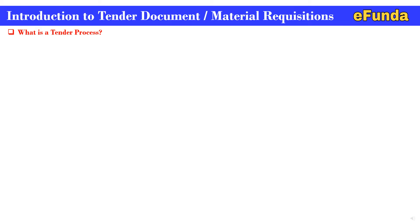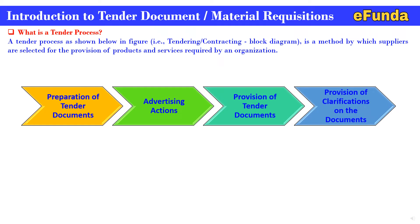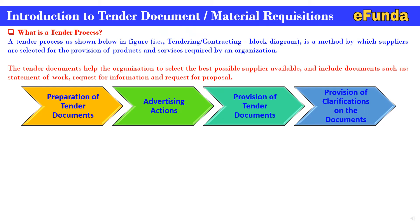What is a tender process? A tender process, as shown in the tendering and contracting block diagram, is a method by which suppliers are selected for the provision of products and services required by an organization. A tender document helps the organization select the best possible supplier available and includes documents such as statement of work, request for information, and request for proposal. Preparation of a tender document, advertising, provision of a tender document, and provision of clarification on the document are the key parts of the tendering process.